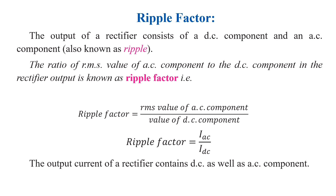That AC component present in the output of the rectifier is called the ripple factor. The ripple factor is defined as the ratio of the RMS value of the AC component to the pure DC component present in the rectifier output.